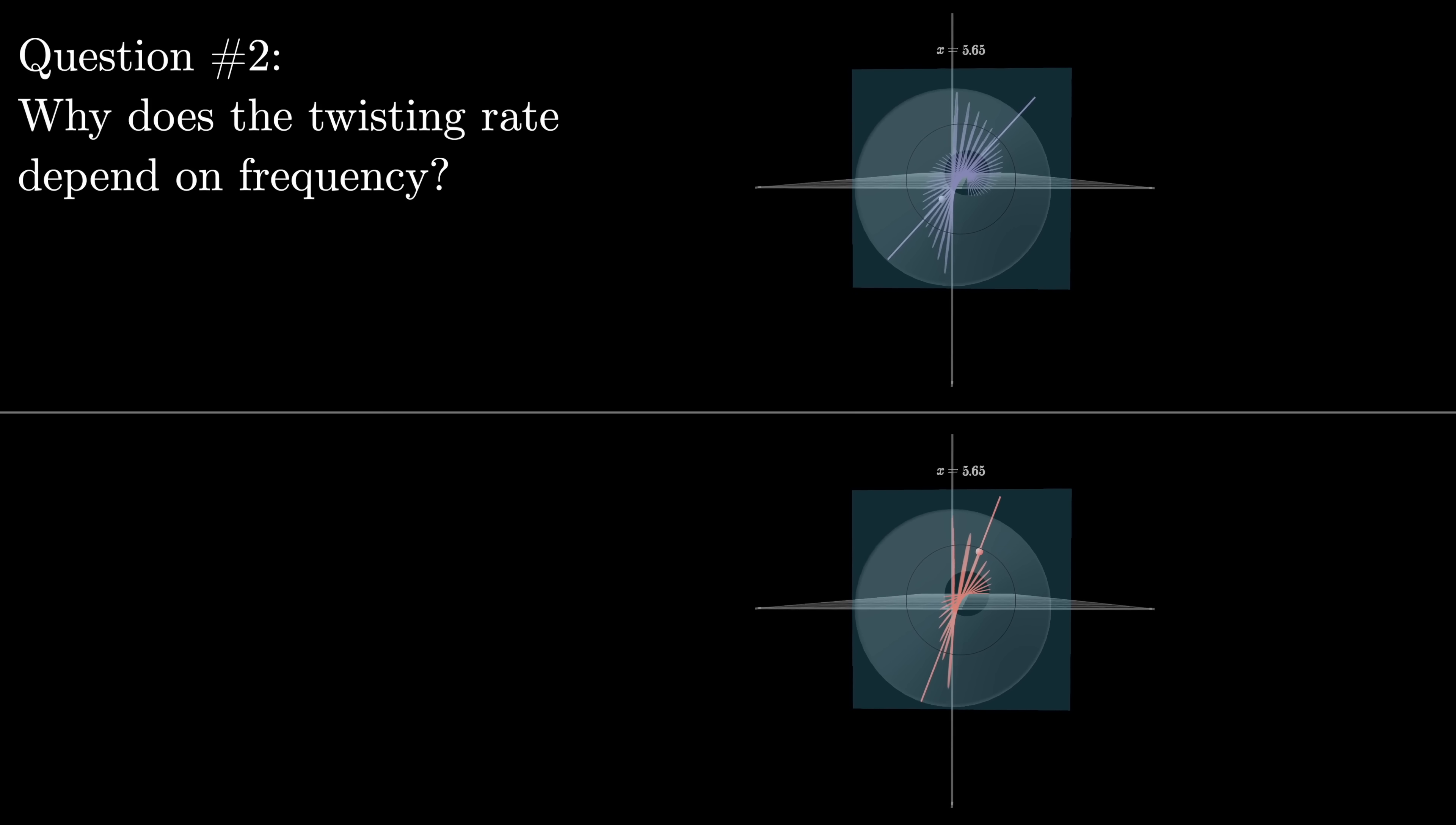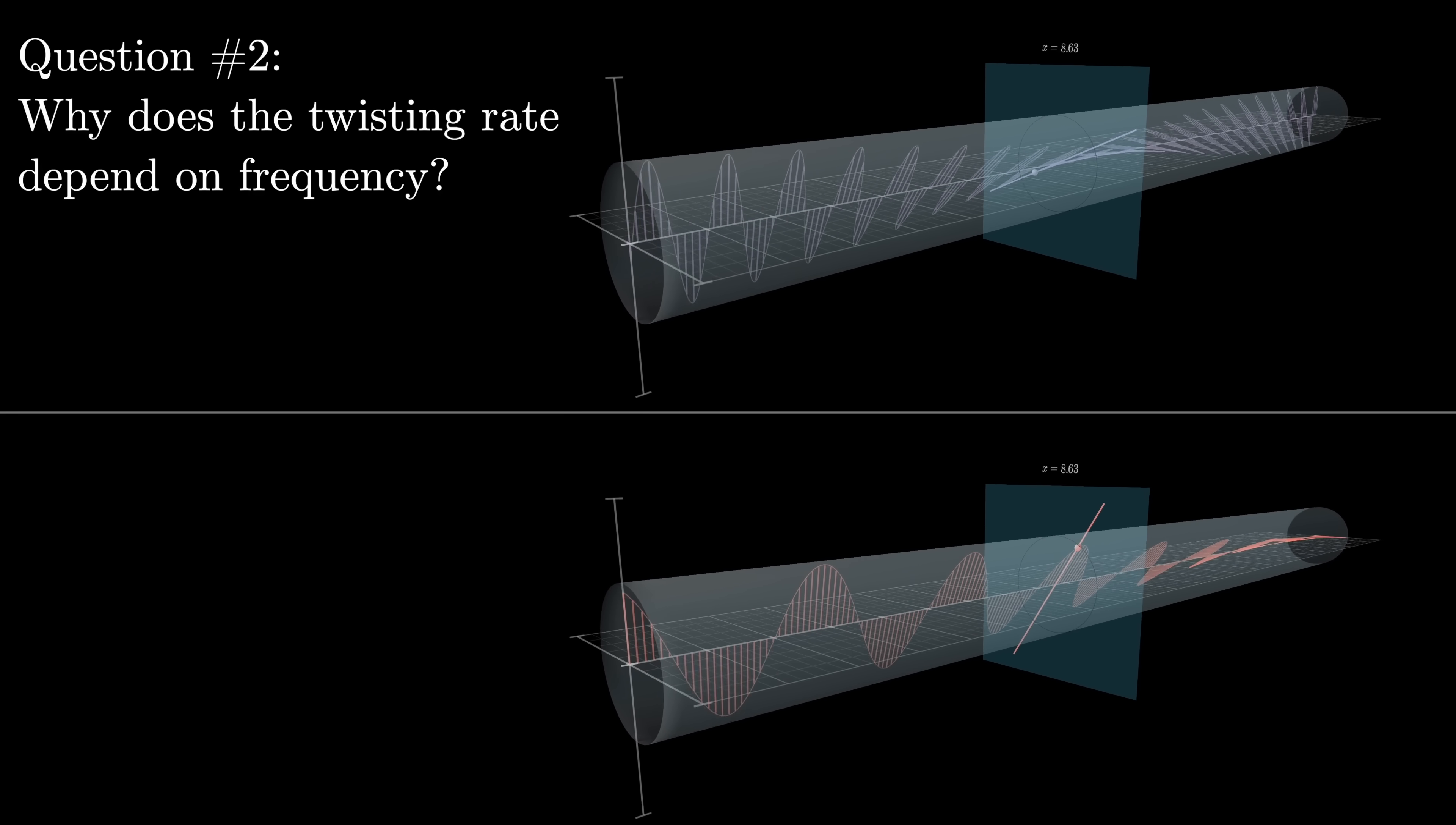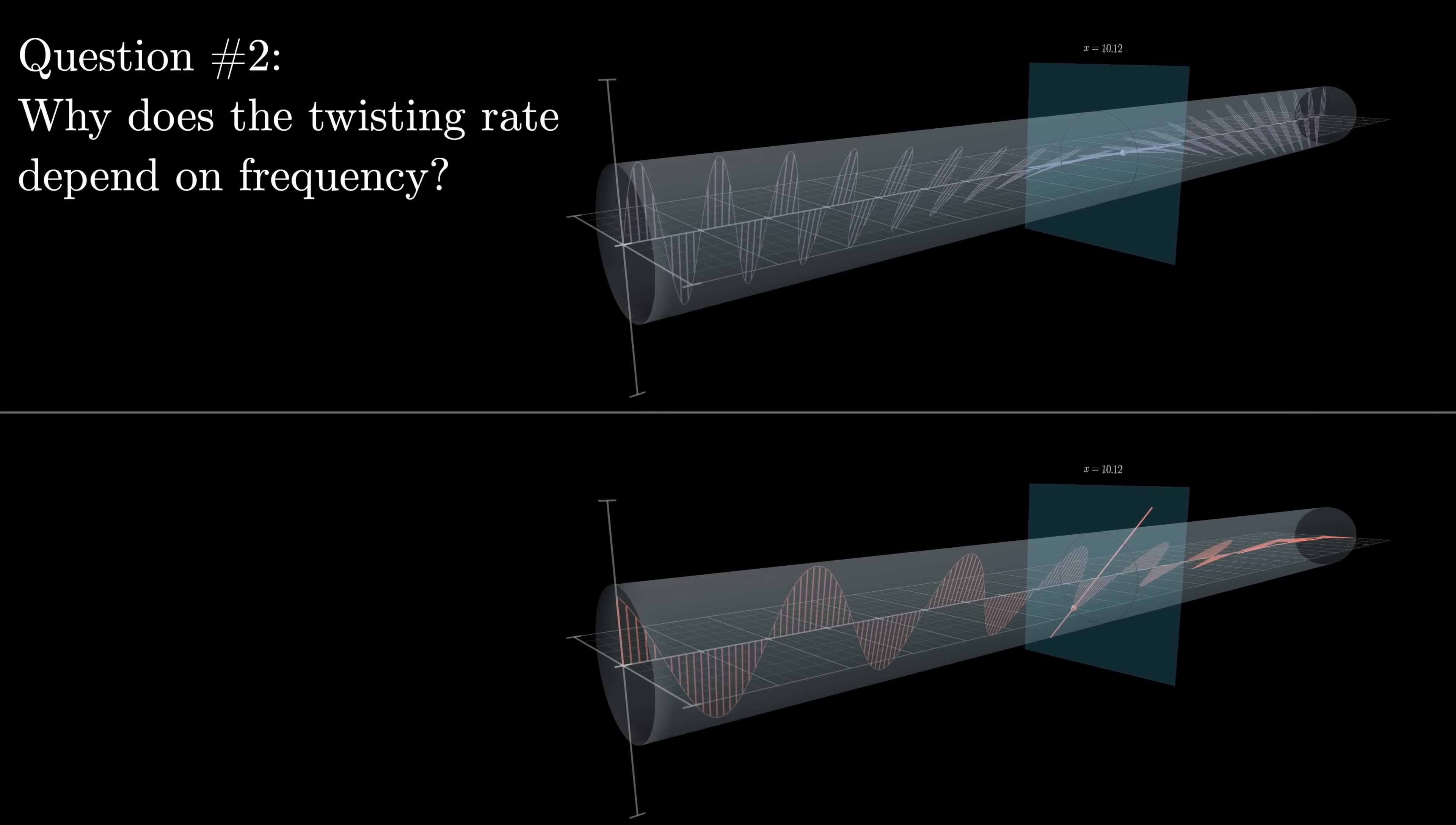So the second key question we need to answer is why would that twisting rate depend on the frequency? Whatever explanation we come to for why the twisting happens in the first place, it should offer some intuition for where the dependence on frequency would come from.